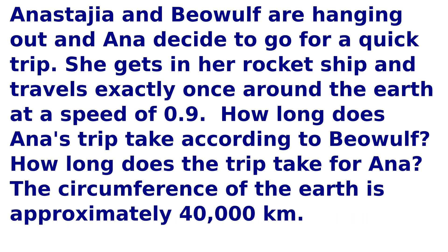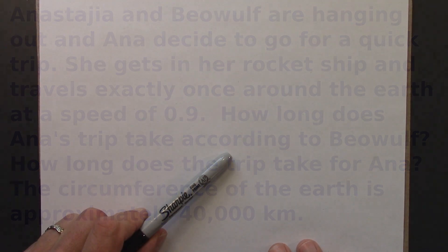The scenario is shown on the screen. Anastasia and Beowulf are hanging out, and Ana decides to go for a trip around the Earth in her rocket ship. She goes around the Earth exactly once at a constant speed of 0.9. We want to know how long does this trip take, what's the time interval between departure and return? How long does that trip take according to Beowulf at rest on the Earth and according to Ana who is circling the Earth. The circumference of the Earth is approximately 40,000 kilometers.